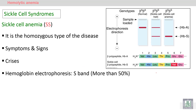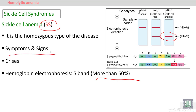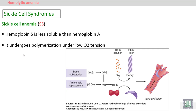In sickle cell disease or sickle cell anemia, the genetic makeup is SS. You can see in the electrophoresis that S is more than 50%. The patient with sickle cell anemia will have manifestations — symptoms and signs — in addition to very important crisis.